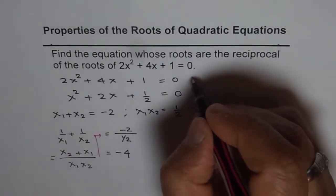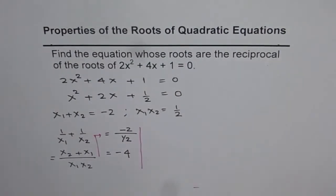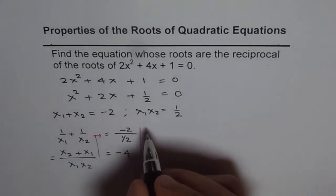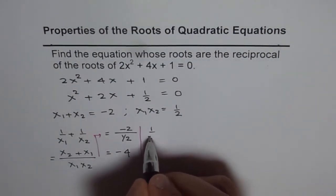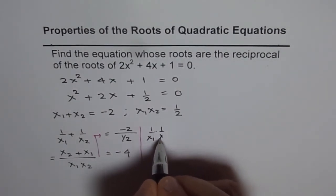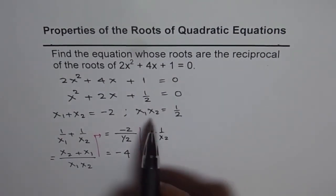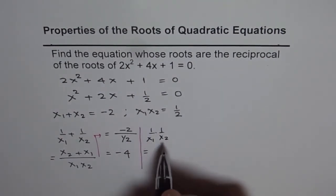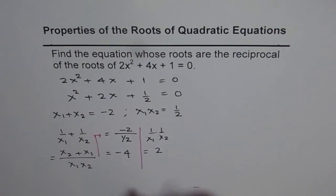Now let us find the product, that means 1/x₁ times 1/x₂. Now since x₁x₂ is 1/2, then 1/(x₁x₂) will be 2, so the product is 2.